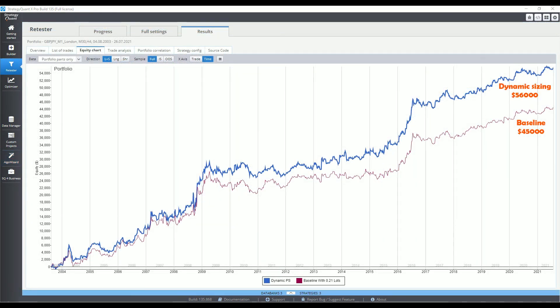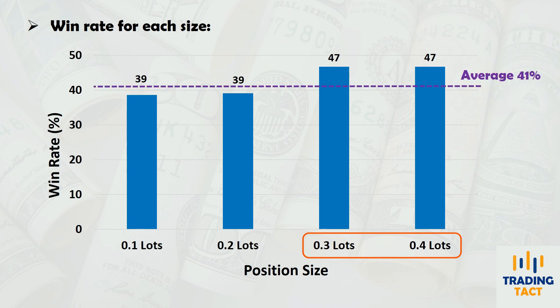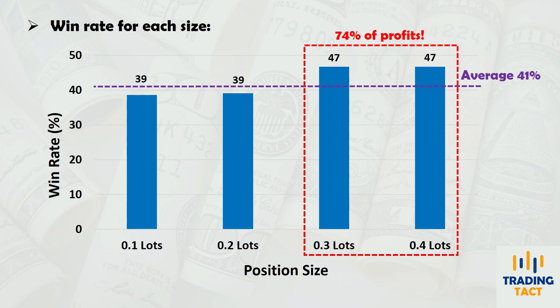Looks like going big on the higher probability trades netted me an additional 25% profit. Lastly, I wanted to check whether the three optional conditions were effective at picking out higher probability trades. I decided to plot the win rate for each of the four position sizes. Indeed, entries that satisfied at least two of the optional conditions had win rates of 47%, significantly higher than the overall win rate of 41%. Despite consisting of only a third of the 1,640 trades, these entries accounted for 74% of the overall profits.